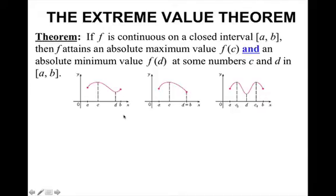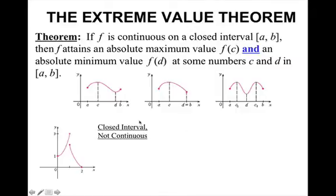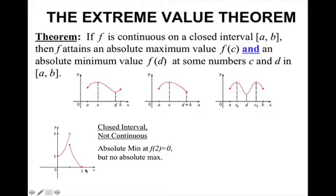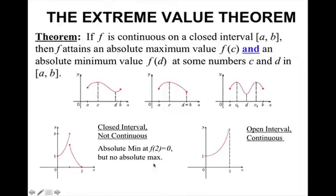Here are some examples of continuous functions on a closed interval with the high and low point. Now, this is a closed interval but not continuous — it has an absolute min right here at 2, but no absolute max because that is an open dot. And this is an example of an open interval that is continuous — there is no absolute max or min, because this is an open dot.